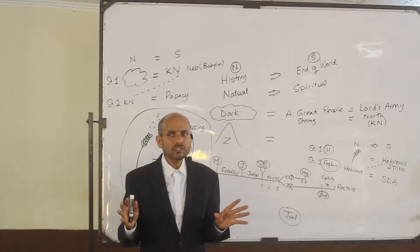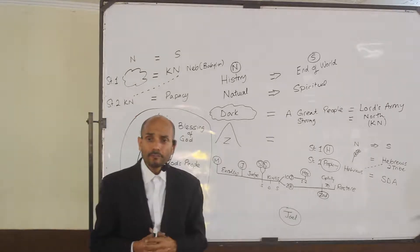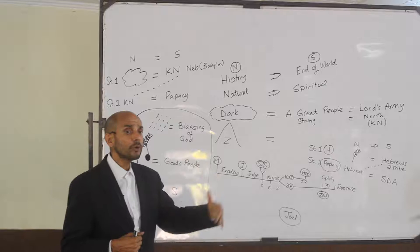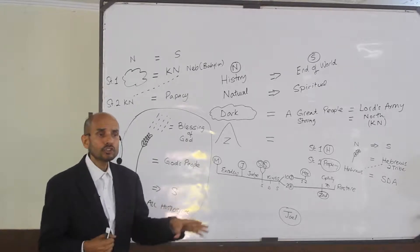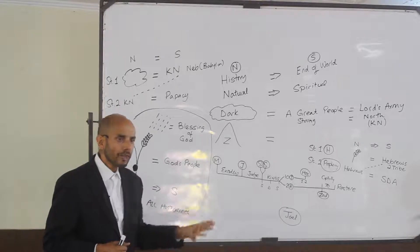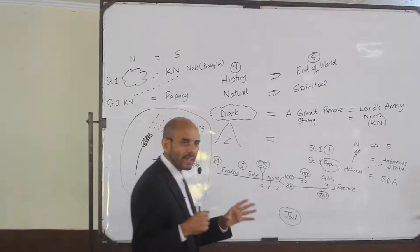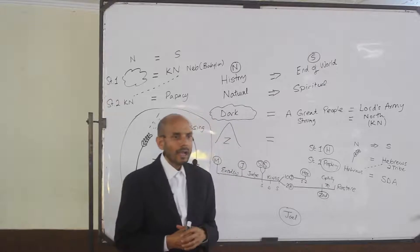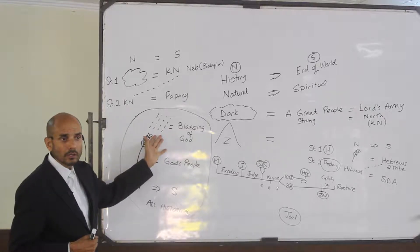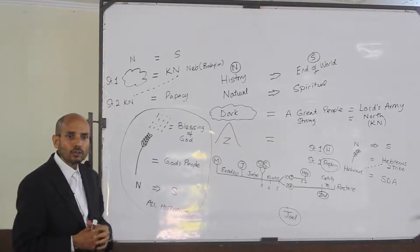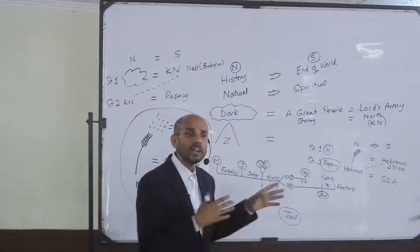Jerusalem represents the two tribes. Then the second part of chapter two: if you repent, what will God do to the army? Destroy it — verse 20, chapter 2. And then what will He do? Pour rain upon you to restore you. That's all the clues we need to understand where to place the book of Joel.